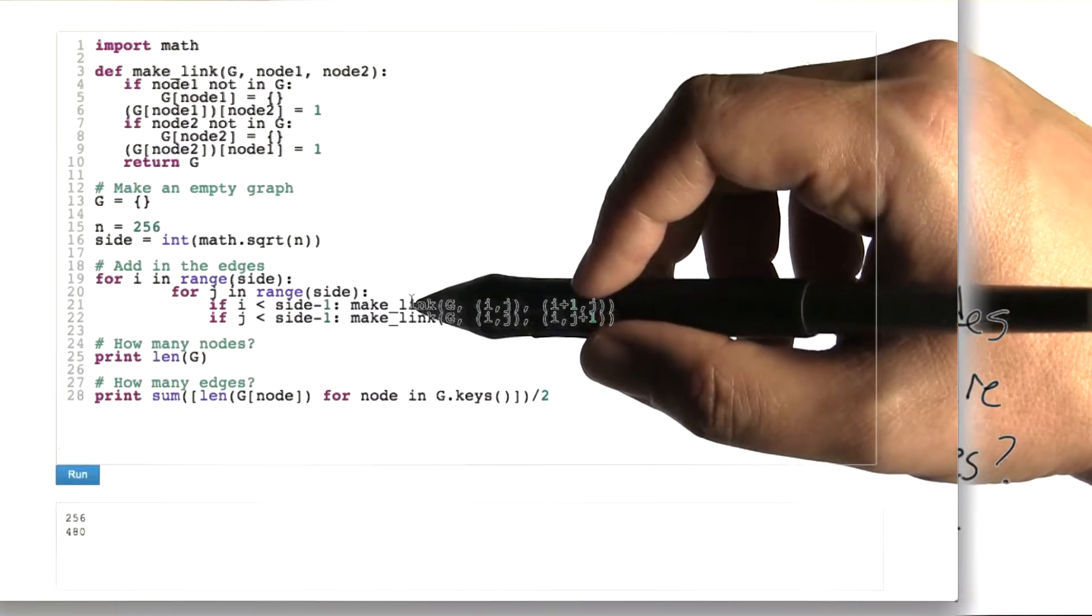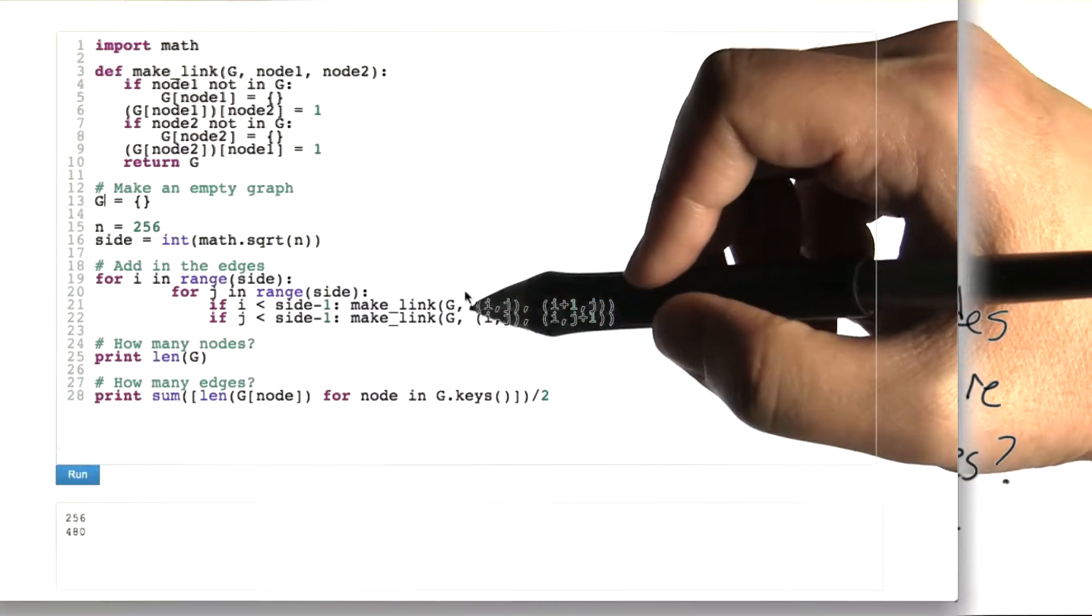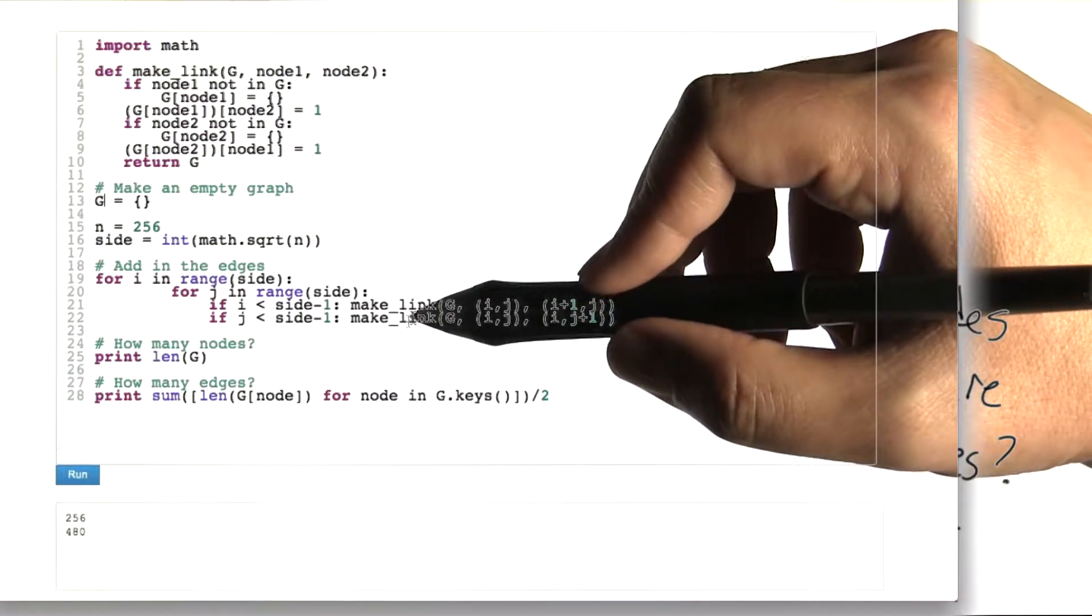we're going to make a link. Well, if it's not on the bottom edge, then we're going to make a link downward. And if it's not on the right edge, we're going to make a link to the right. And that's going to build our grid.